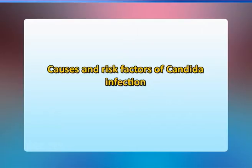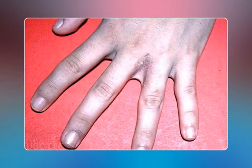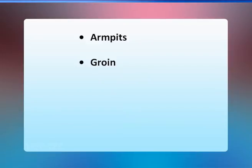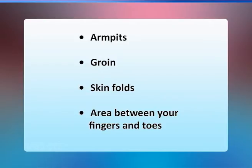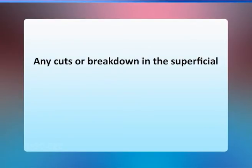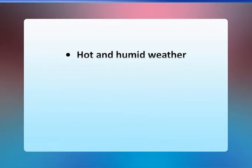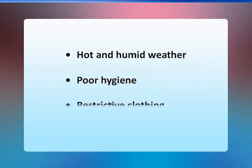Candida skin infections can occur on almost any area of the body, but are more commonly found in intertriginous regions — where two skin surfaces touch or rub together — such as the armpits, groin, skin folds, and areas between fingers and toes. The fungus thrives in warm, moist, and sweaty conditions. Normally skin acts as an effective barrier, but any cuts or breakdown in the superficial layers may allow the fungus to cause infection. Candida becomes pathogenic when conditions are favorable for it to multiply, such as hot and humid weather, poor hygiene, or restrictive clothing.